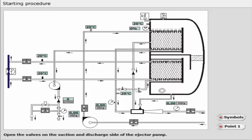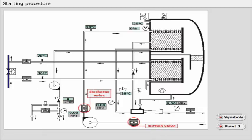Open the valves on the suction and discharge side of the ejector pump. Open the overboard valve for combined air brine ejector. Close the air valve on the upper part of the separator vessel.